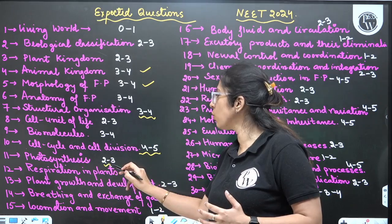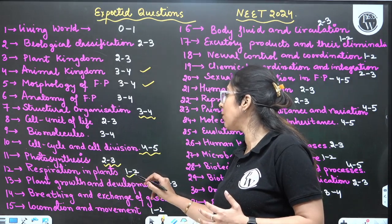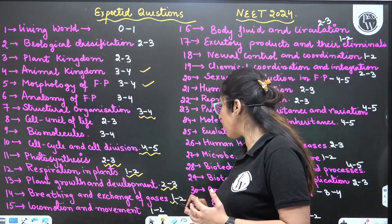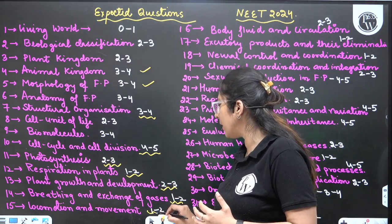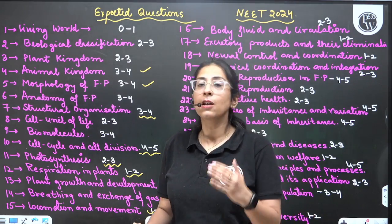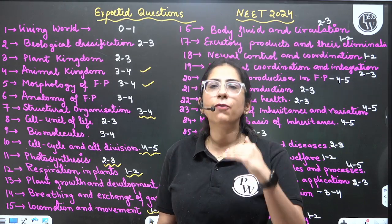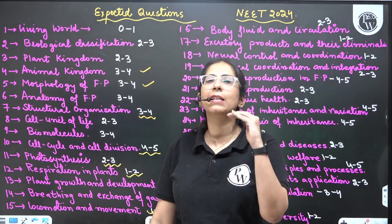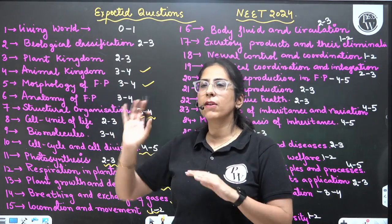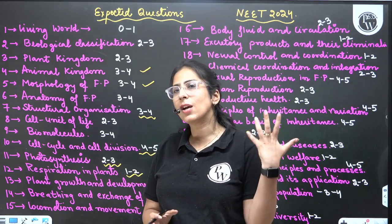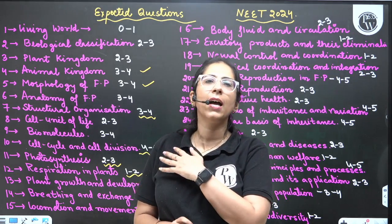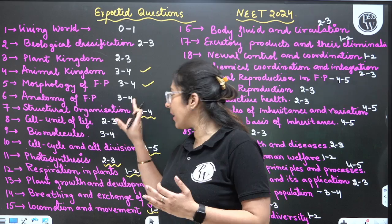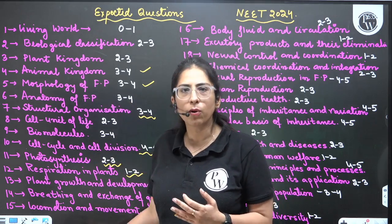Photosynthesis: 2 to 3 questions. Respiration in Plants: 1 to 2 questions. Plant Growth and Development: 2 to 3 questions. Breathing and Exchange of Gases: 1 to 2 questions. Locomotion and Movement: 1 to 2 questions. Accordingly you can decide, but my recommendation is do not skip Cell Cycle and Cell Division. Living World is quite easy — just one revision will make you thorough with it. Do prioritize chapters which have more weightage.